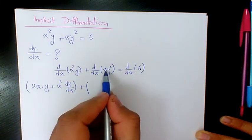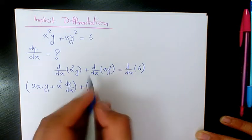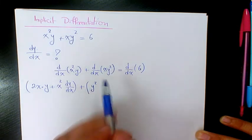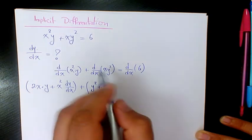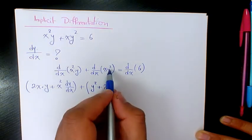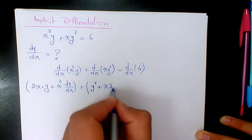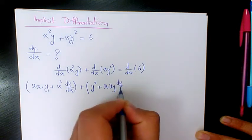Second one is going to be the derivative of x times y squared, which is going to be y squared because the derivative of x is 1, plus x times the derivative of y squared, which is 2y dy over dx.